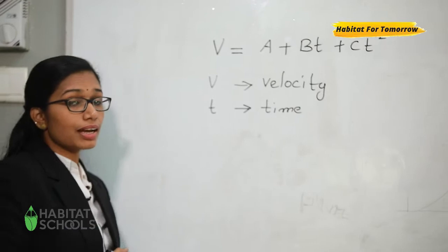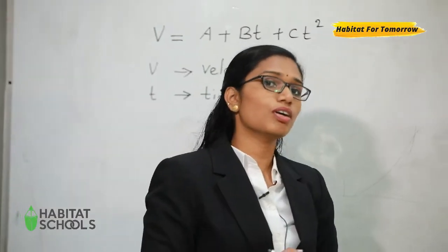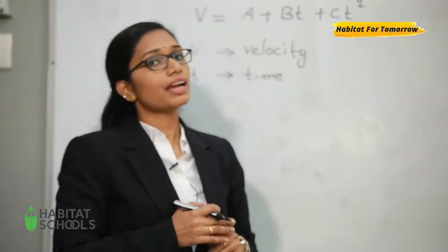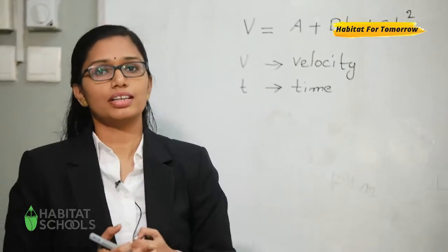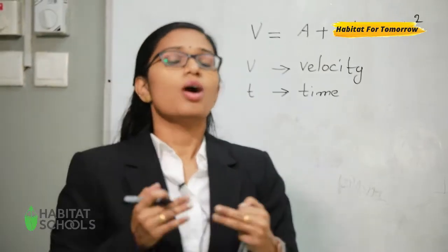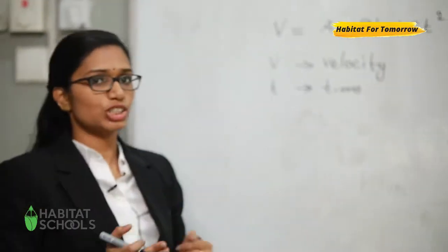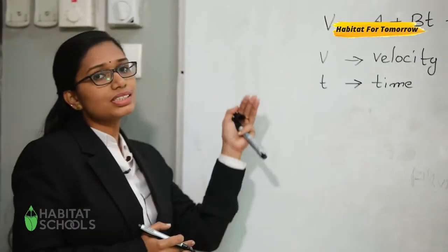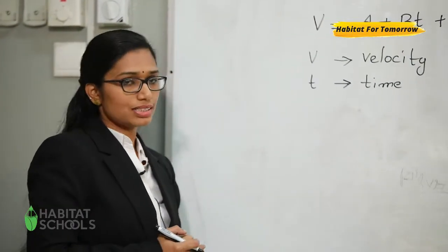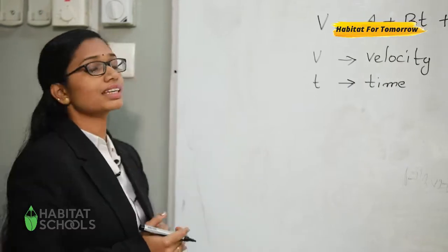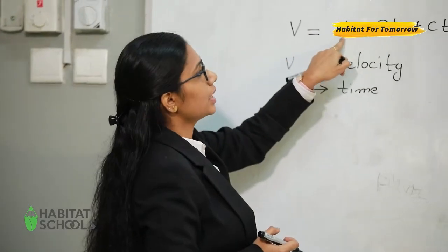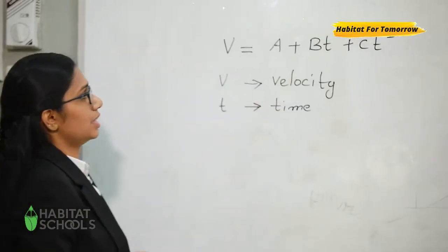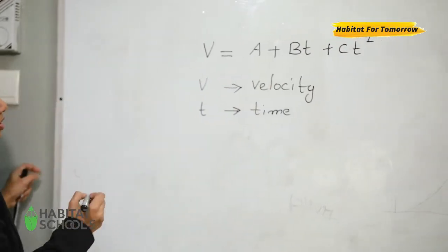But the dimension of all these terms should be equal to the dimension of velocity. We had discussed in the principle of homogeneity that we can add or subtract physical quantities only if they have the same dimensions. So, keeping these two points in mind, let us calculate the dimensions of A, B and C.